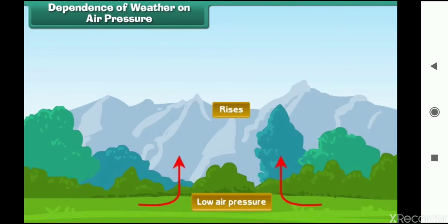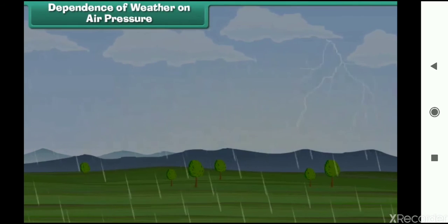In areas of low pressure, air rises up into the atmosphere. Low pressure areas have high humidity, clouds, rain, and other kinds of precipitation.